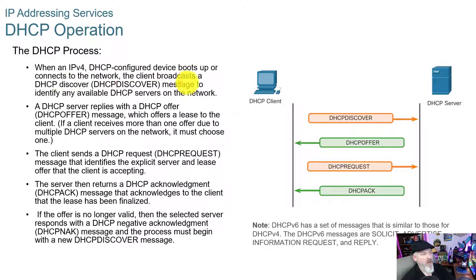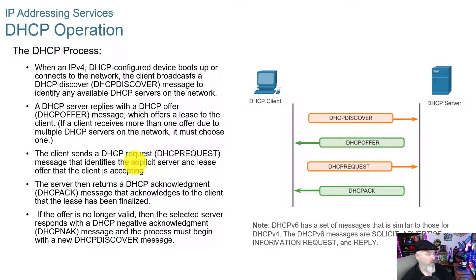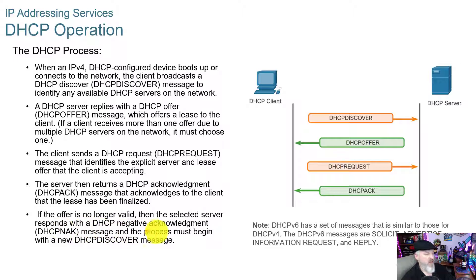When a DHCP-configured device boots up or connects to the network, the client broadcasts a DHCP Discover message to identify any available DHCP servers. If a server is found, it replies with an offer. The client then sends a DHCP Request message asking for an IP address. The server returns a DHCP Acknowledgement confirming the lease has been finalized. If the offer is no longer valid, the selected server responds with a DHCP Negative Acknowledgement and the process must begin again with the DHCP Discover.